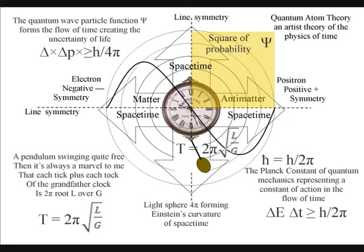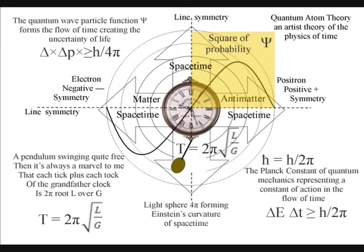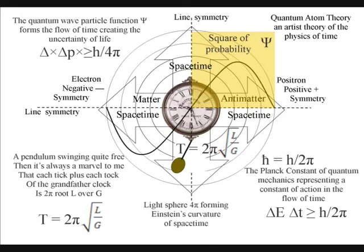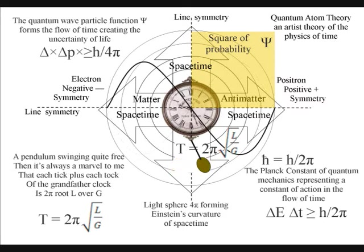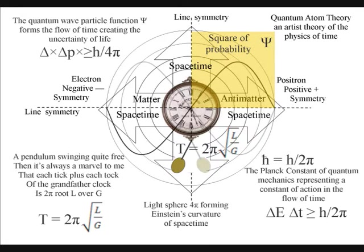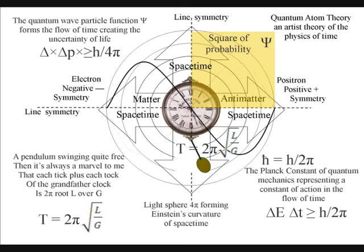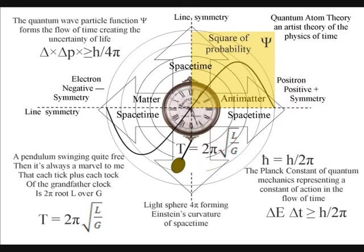Almost everywhere else in this diagram we see two pi. The reason for this is that equations with two pi have cylindrical symmetry — a form of line symmetry. This line symmetry is formed because when light comes into contact with matter it forms a photon-electron coupling, and we have matter-antimatter annihilation in just one direction, forming the arrow of time. In the lower right-hand corner of the diagram we have the Planck constant h over two pi, representing a constant of action in the dynamic process that forms the arrow of time.